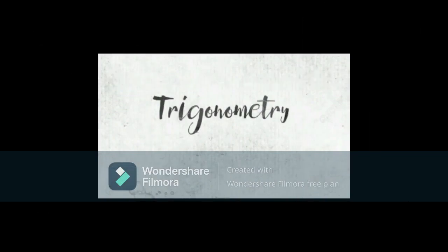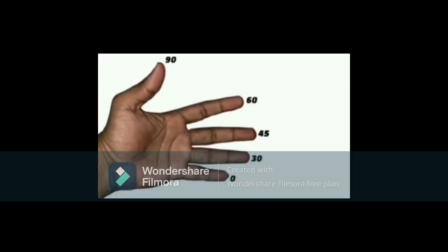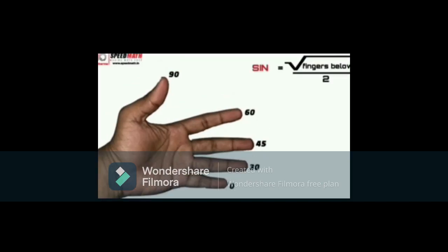Memorizing trigonometric values has always been a nightmare to many of us. Here, we're going to show you a simple trick to memorize the values using your fingers. So, for that, take your left hand. Let the little finger represent 0 degree, the ring finger represent 30 degree, the middle finger represent 45 degree, the index finger represent 60 degree, and the thumb represent 90 degree. So, let's begin by finding out the values of sine. For that, count the number of fingers below, take the square root of that, and divide it by 2.